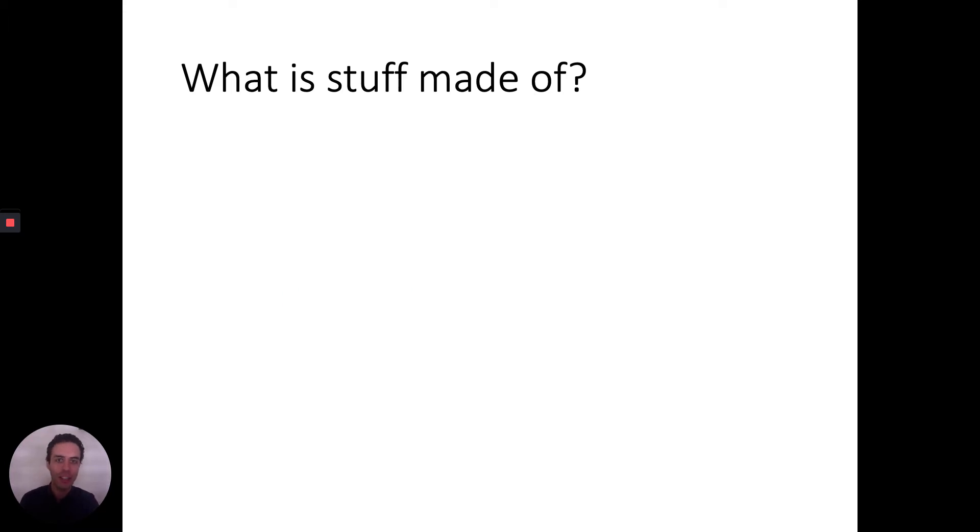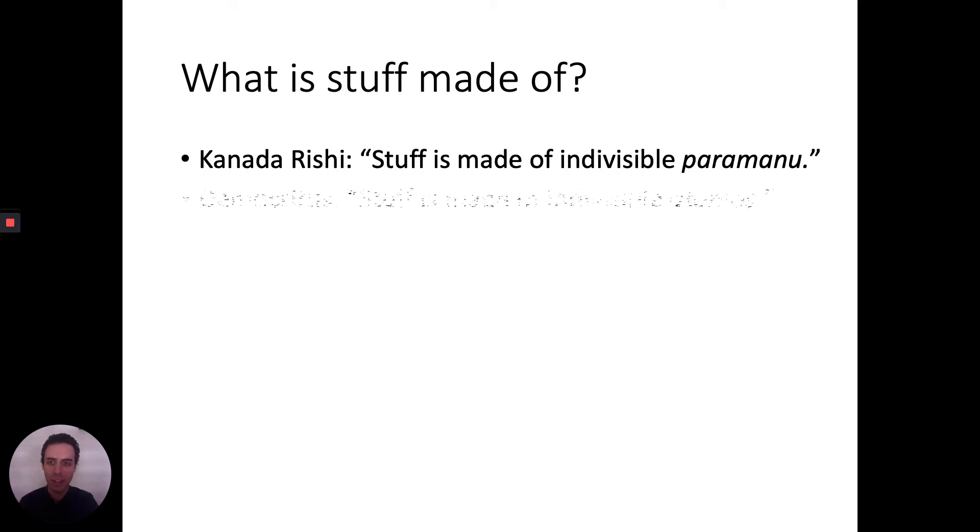A long, long time ago, many hundreds of years ago, the first person to answer this question was Kanada Rishi, and his answer was that stuff is made of indivisible particles that he called Paramanu. Then a couple hundred years later in Greece, Democritus said stuff is made of indivisible particles and he called them Atomos. They're basically saying the same thing, hundreds of years apart in different parts of the world. They didn't talk to each other, but they had the same idea.